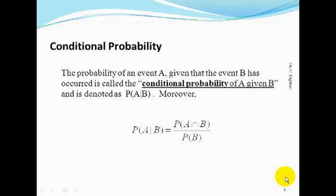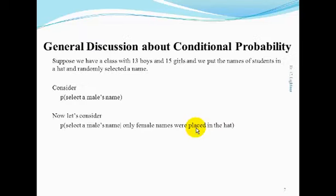Conditional probability. The probability of an event A given that event B has occurred is called the conditional probability of A given B, denoted P(A|B). The formula is: the probability of A given B is equal to the probability of A intersect B divided by the probability of B. Students often struggle with conditional probability, so before moving forward with the formula, let's have a general discussion about what a conditional probability really is.